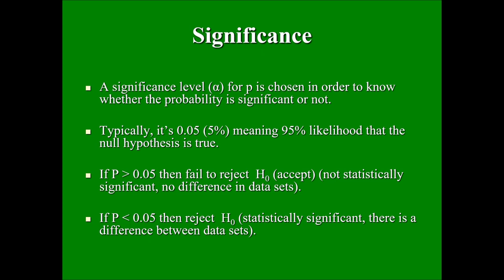Typically 0.05 is used as a significance level for determining statistical significance, which means there is a 95% likelihood that the null hypothesis is true or false. If the p-value — which is not our case but could be when you do your own calculation with your sample — turns out to be higher than 0.05, you will fail to reject the null hypothesis, meaning you accept that there is no statistically significant difference between your samples.